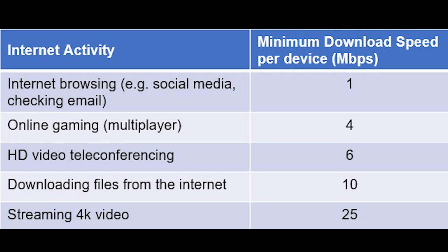Another thing to consider is that these minimum bandwidth requirements are on a per-device basis. In other words, if you have two devices streaming ultra high definition video, you'll need twice as much bandwidth. I've put together an example here to show you exactly what this means when it comes to your internet plan.